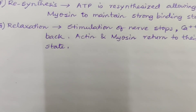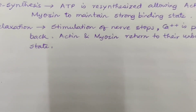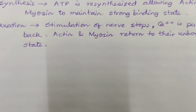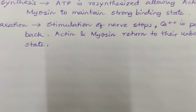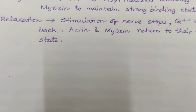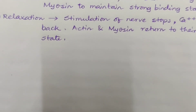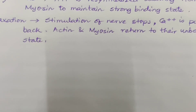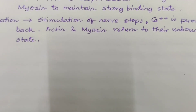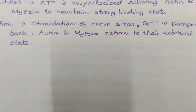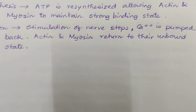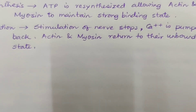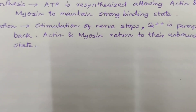Stage 5 is resynthesis — ATP is resynthesized, allowing actin and myosin to maintain a strong binding state. The last stage is relaxation — stimulation of the nerve stops, calcium ions are pumped back, and actin and myosin return to the unbound state. With this we end this part.